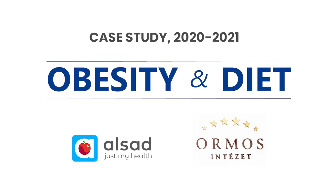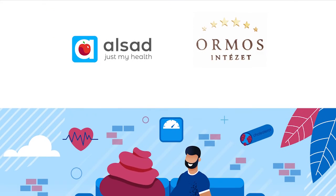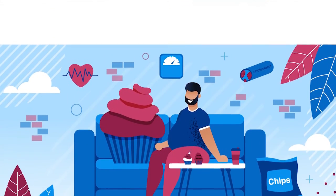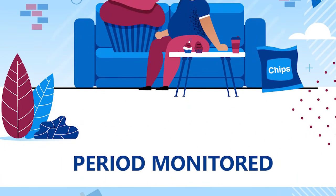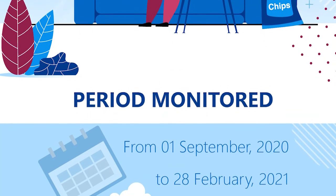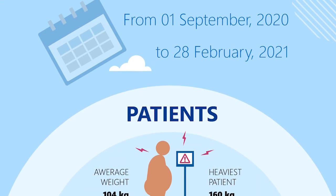Our case study is about a group being treated at Ormos Institute, which is a private healthcare hospital in Budapest, Hungary, offering a wide range of health services with a large group of experienced clinicians. Dietitian specialists can support patients to have a healthier diet, address particular problems from hormonal imbalances to chronic kidney disease, or manage weight to prevent a chronic condition. ALSAD was a complementary service alongside the complex consultation process delivered by clinicians and dietitians after complex diagnostics. This particular case study included over 38 individuals of different ages, most of them seriously overweight. The monitoring period was about 6 months, which can be considered a short period given how many years it takes to become obese.